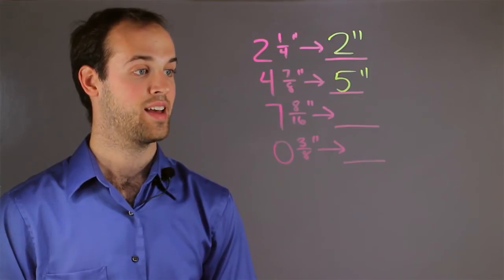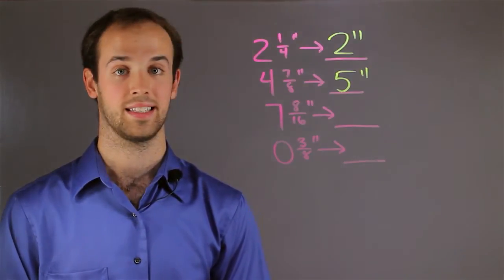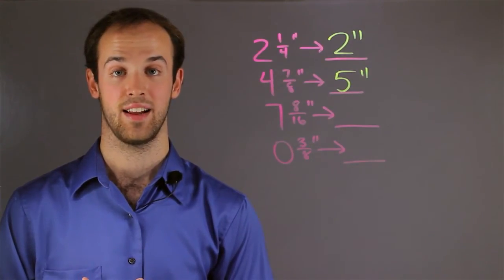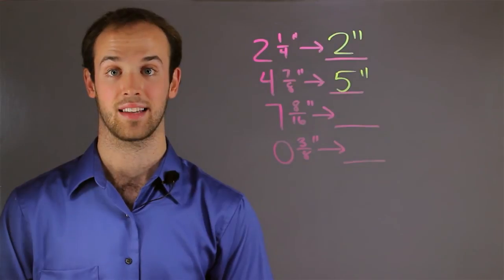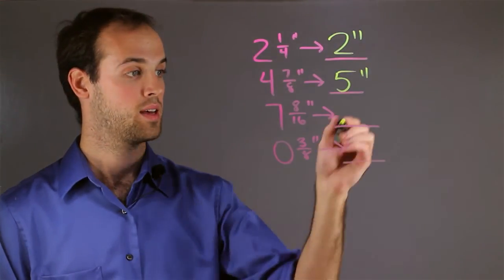Next, I have seven and eight sixteenths of an inch. Look at the fractional part. We see it's eight sixteenths. And what would half be? Well half of sixteen is eight, so eight sixteenths is exactly half. So this is going to round up to eight inches.